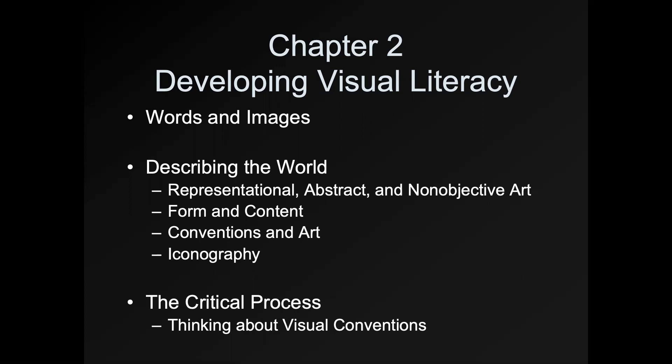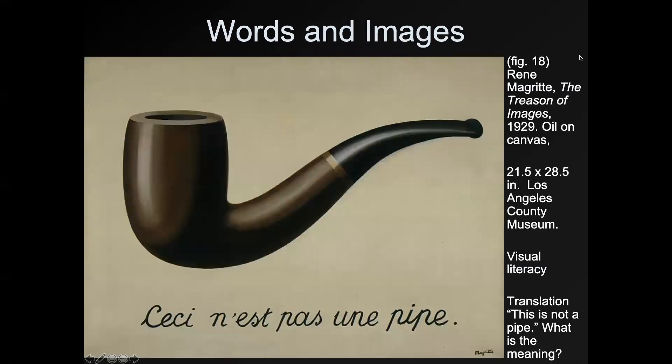Some subjects we're covering in this lecture: words and images, how artists describe the world, definitions for representational, abstract, and non-objective art, examples, the meaning of form and content, conventions in art — meaning accepted practices, not meetings for artists — and iconography. We'll put it all together at the end, applying ideas to some images using a method from the old textbook called the critical process.